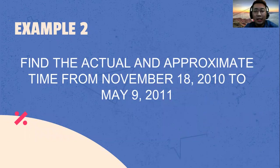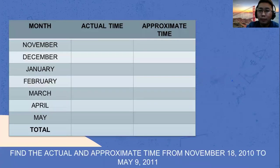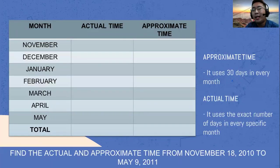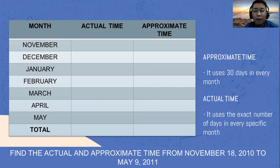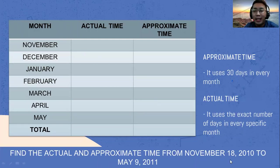Let's try another example. Let's find the actual and approximate time from November 18, 2010 to May 9, 2011. Since we are starting from November 18, we subtract 18 from November's actual time of 30 days, giving us 12. For approximate time it is also 12, because approximate time uses 30 days in every month.